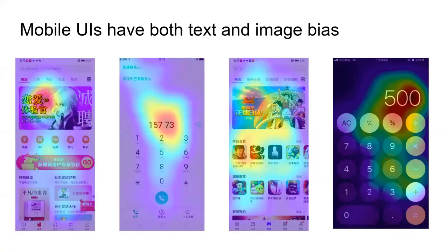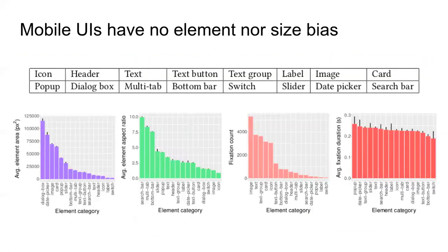We found evidence for a strong text bias, and a bias toward images and faces. There was no evidence for a size bias, both in terms of area and aspect ratio of the UI elements.